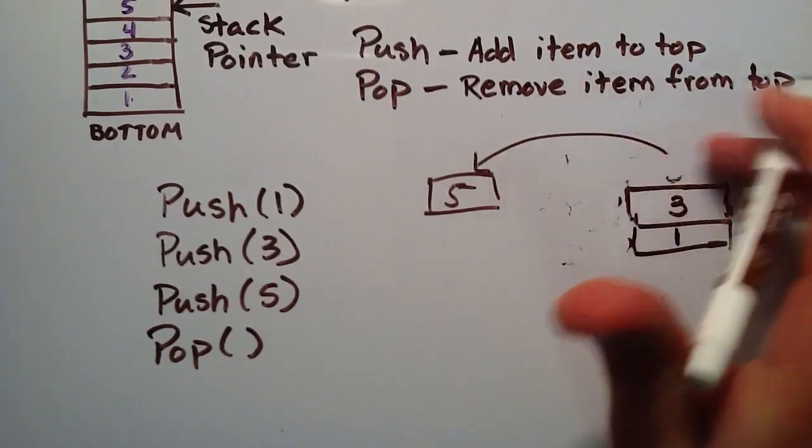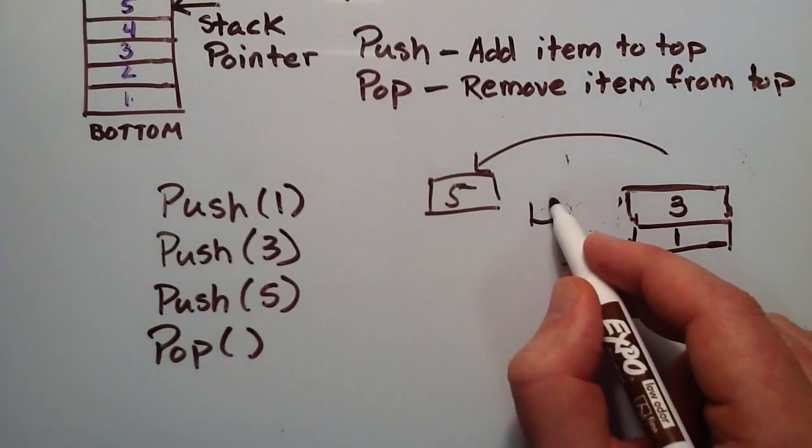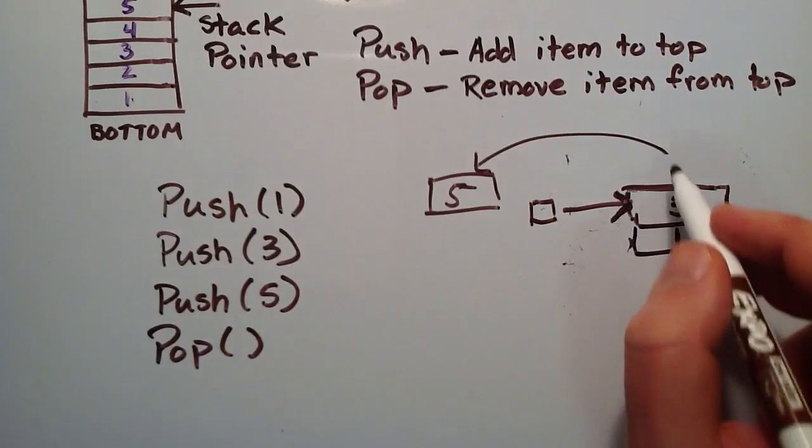And then once that's done, it would just delete the top node and move the stack pointer to the new top, to the element below it.